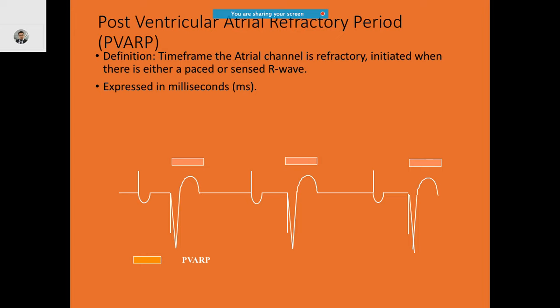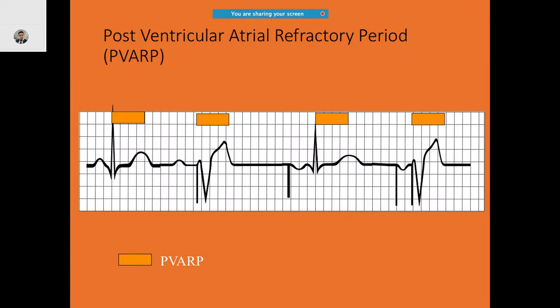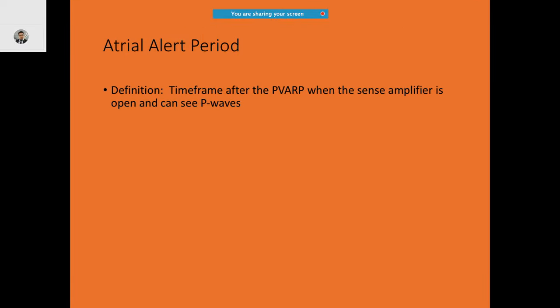In simple terms: after a paced or sensed ventricular event, the atria go into refractory — that is PVARP. The atrial alert period is the time frame after PVARP when the sense amplifier is open and can detect P waves.